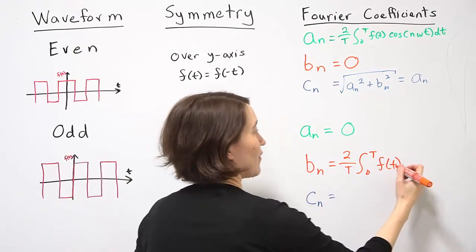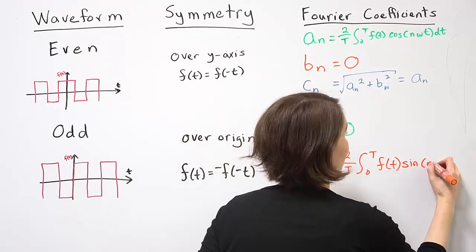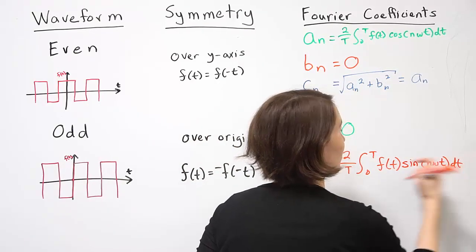And remember it's based on f of t times the sine of n omega t dt, integrated.